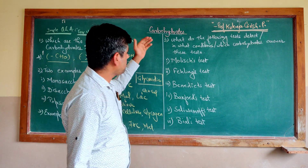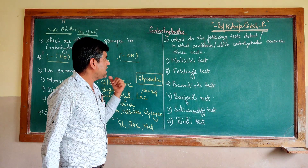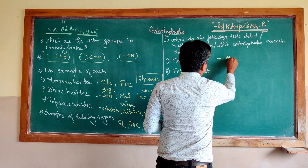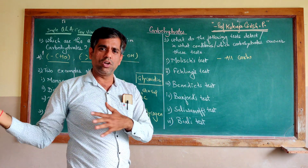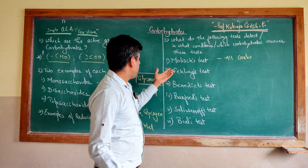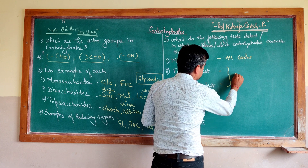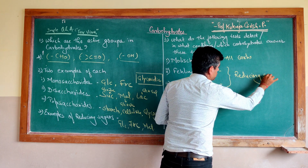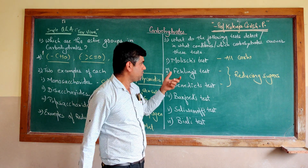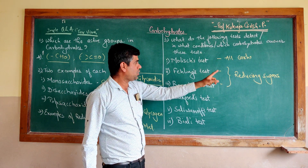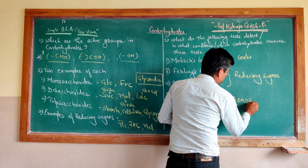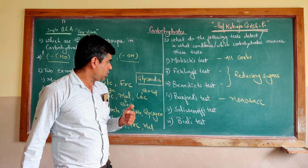What do the following tests detect? The Molisch test is answered by all carbohydrates — whether mono, di, oligo, or poly — all of them give a positive reaction for the Molisch test. The Fehling's test and Benedict's test are both specific for reducing sugars. The Barfoed's test is more specific for monosaccharides.